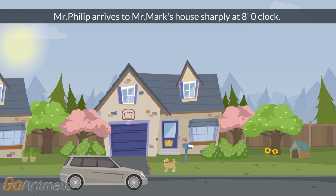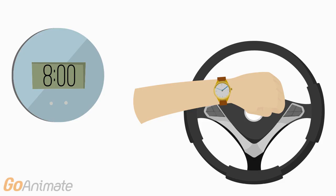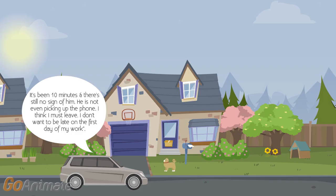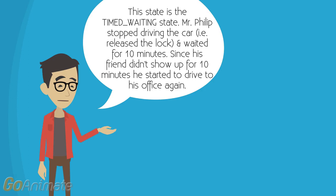Mr. Philip arrives at Mr. Mark's house sharply at 8 o'clock. It's 8 o'clock sharp — I think I should wait for him for some time. It's been 10 minutes and there's still no sign of him; he is not even picking up the phone. I think I must leave — I don't want to be late on the first day of work. This state is the timed waiting state. Mr. Philip stopped driving the car, that is released the lock, and waited for 10 minutes. Since his friend didn't show up for 10 minutes, he started to drive to his office again.